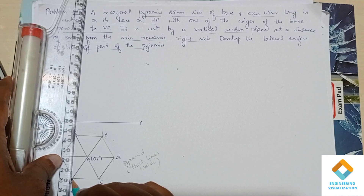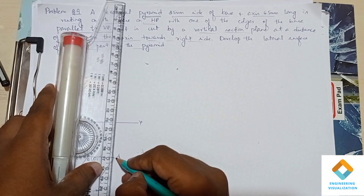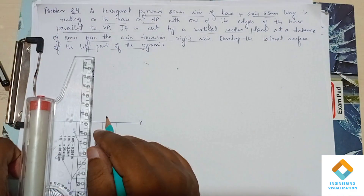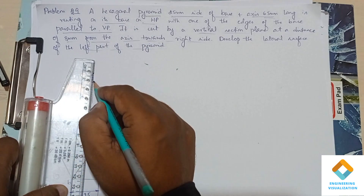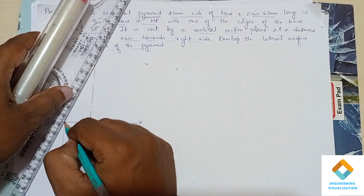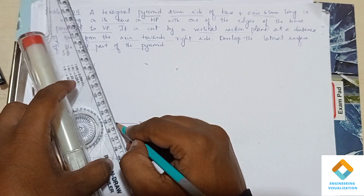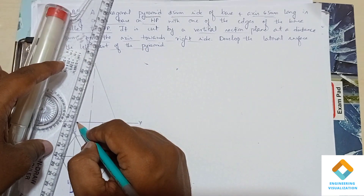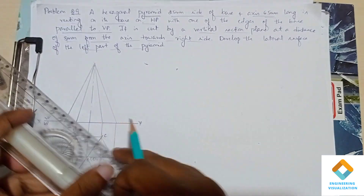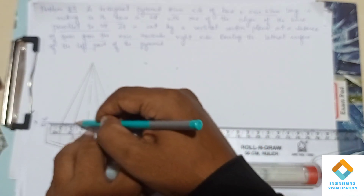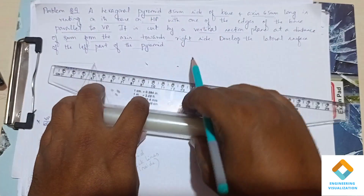Draw the projection lines and draw the front view. The axis length is 65 mm, so draw an axis for a length of 65 mm and draw a triangle. The front view of a pyramid is a triangle. Construct the base of the pyramid and mention the dimension of 65 mm.